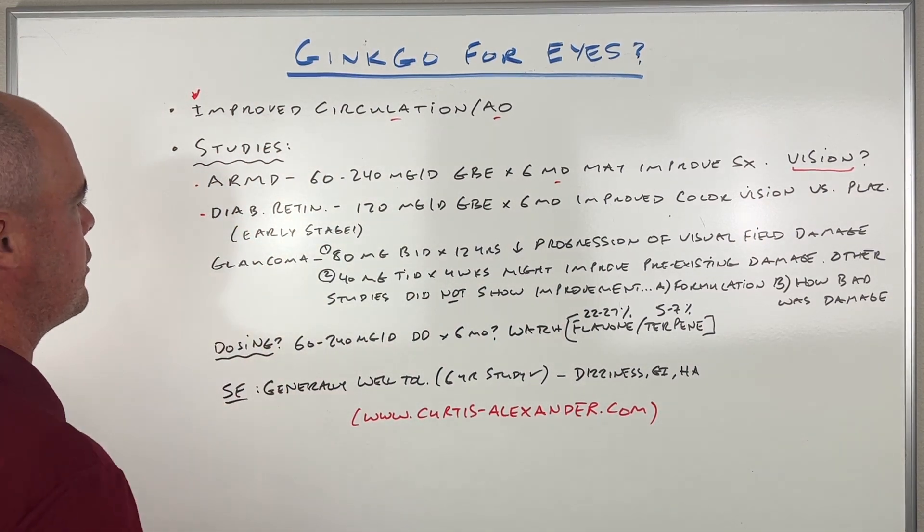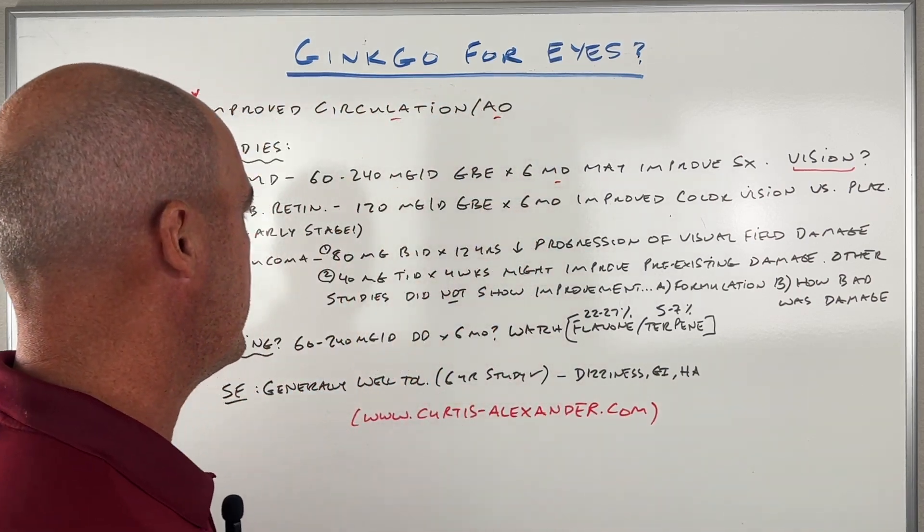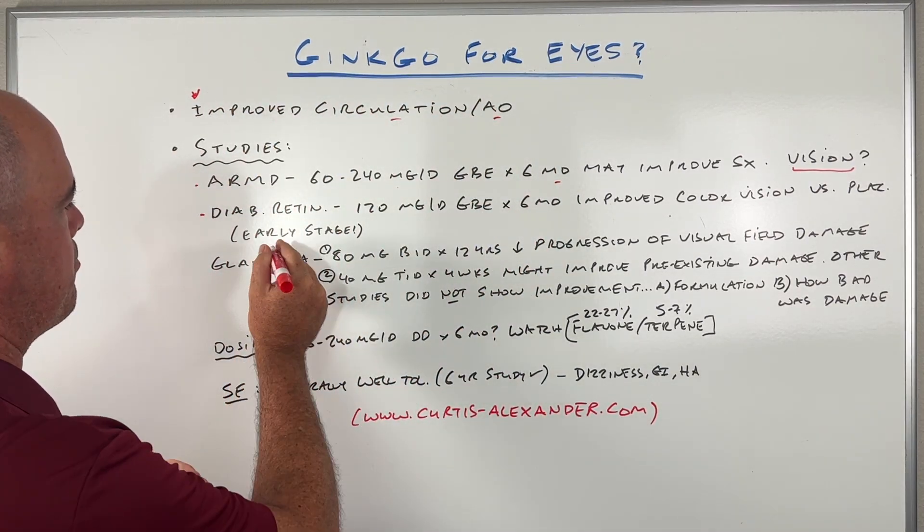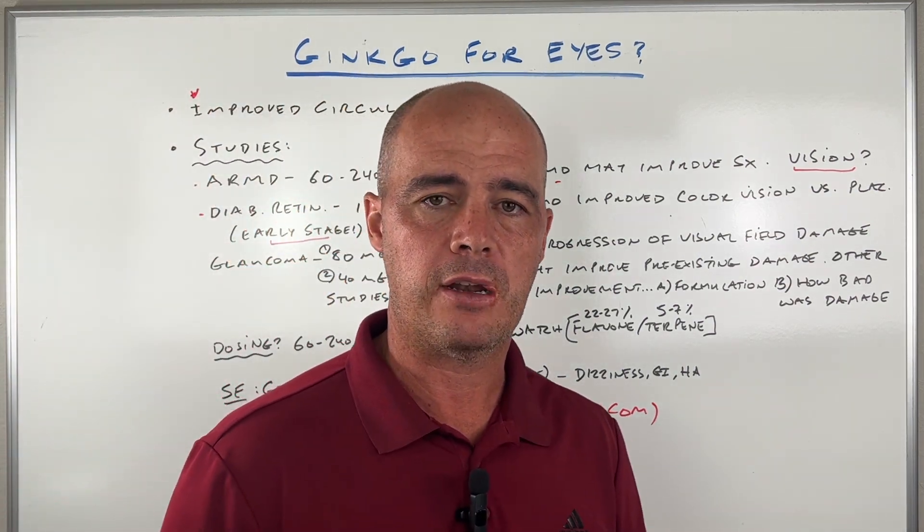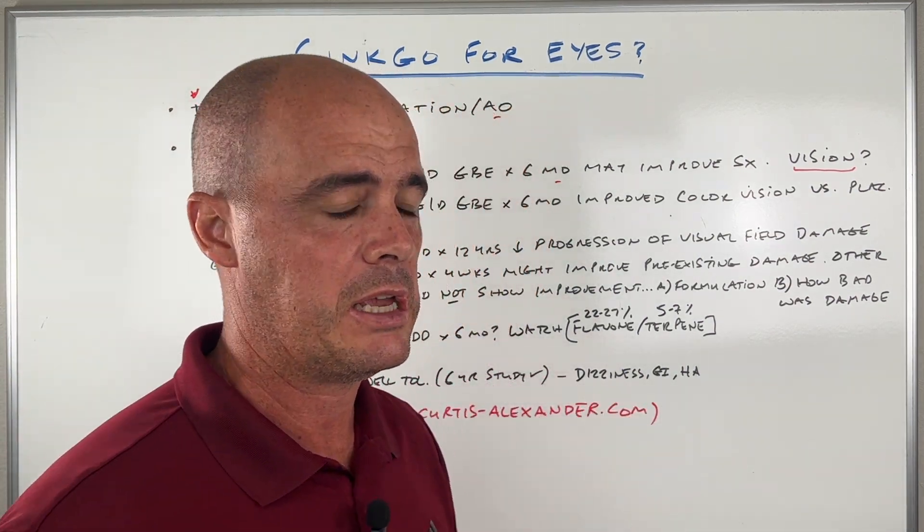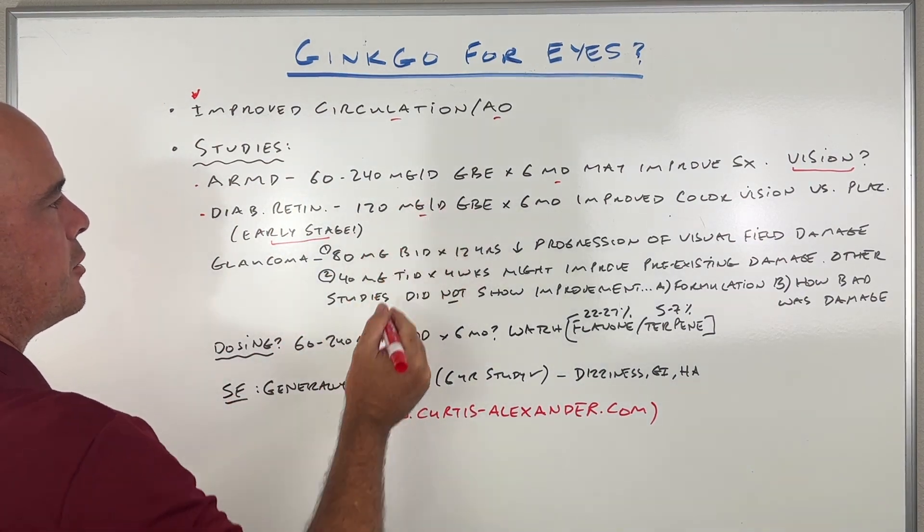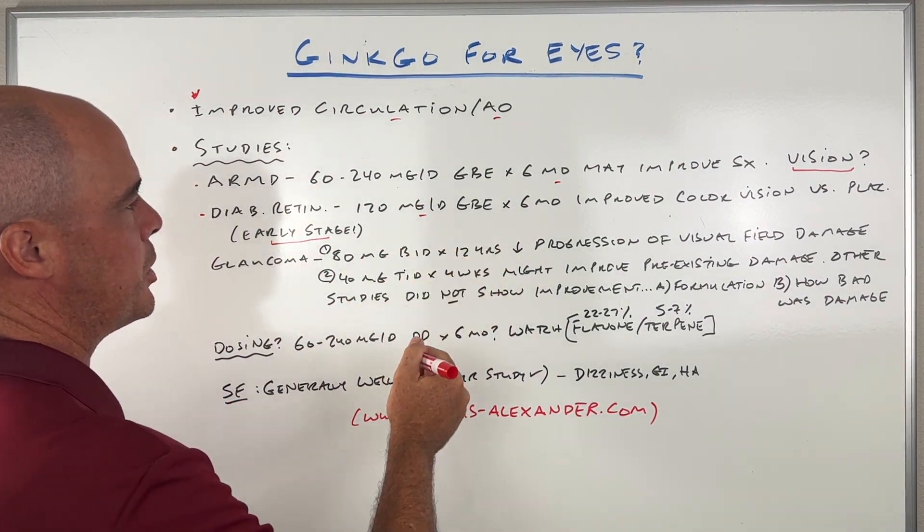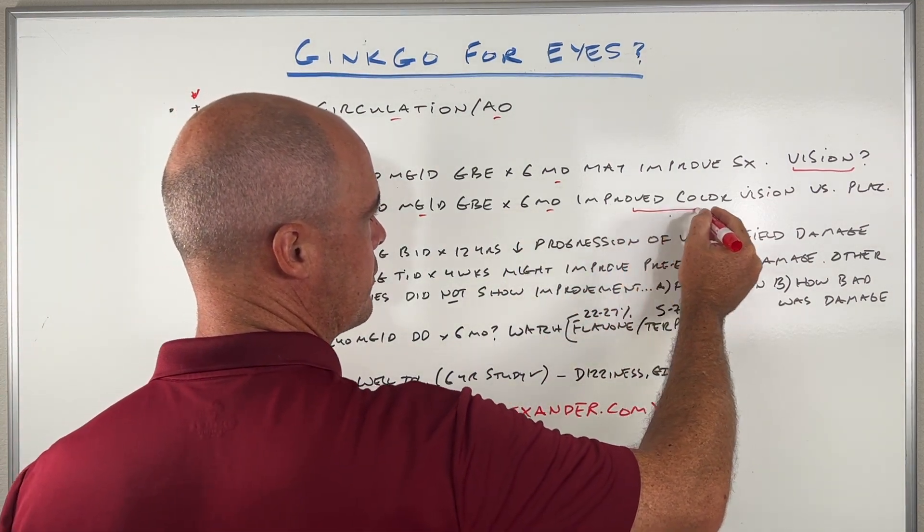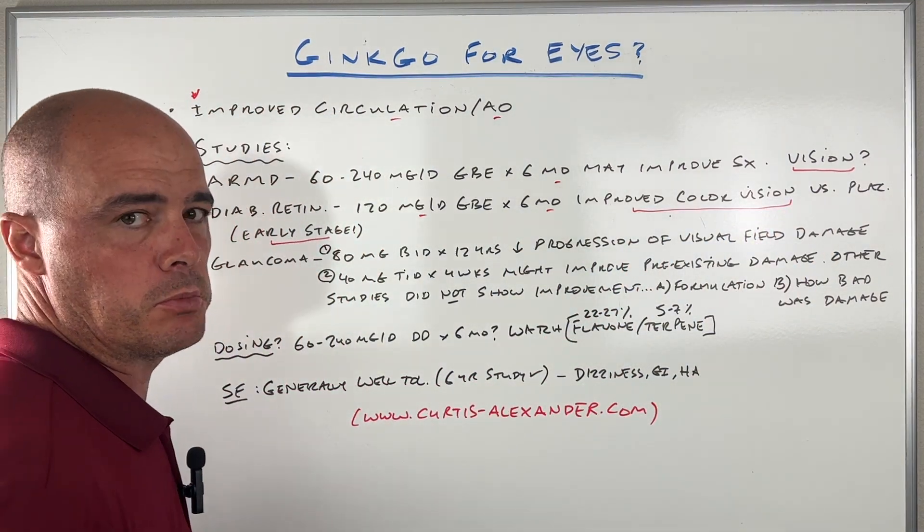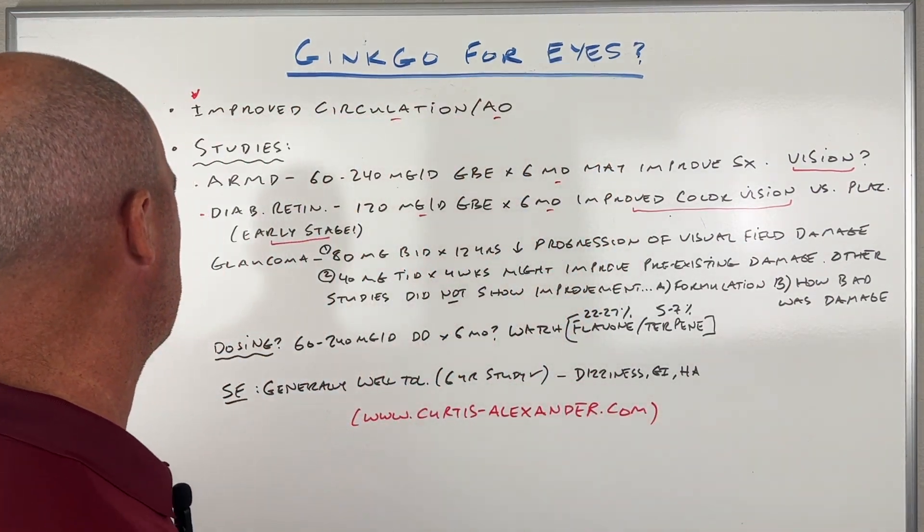They also looked at giving ginkgo to diabetic patients who had retinopathies, which can be fairly common. I want to point out this study was done in very early stage retinopathy, so somebody with late stage, this probably is not going to apply. But they gave 120 milligrams, also ginkgo biloba extract, also for six months. Their color vision did improve versus the placebo, so again, we're seeing some modest improvements.